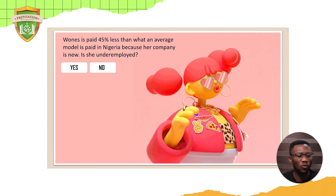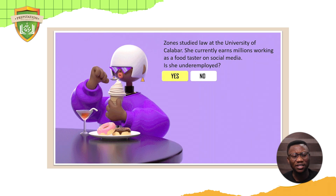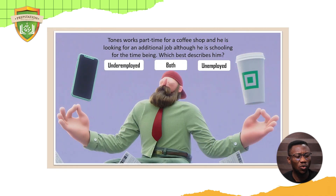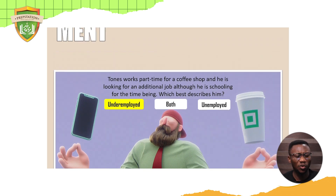Phones is paid 45% less than what an average model is paid in Nigeria because her company is new — that also makes her underemployed. Another example: Phones studied law at the University of Calabar but currently earns millions working as a food taster on social media — she is underemployed because she's not using her law qualification. And if Phones works part-time for a coffee shop and is looking for an additional job or doing schooling, she is underemployed — not unemployed — because she has a part-time job, but the part-time nature makes her underemployed.